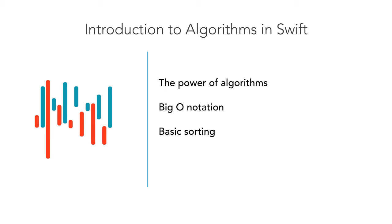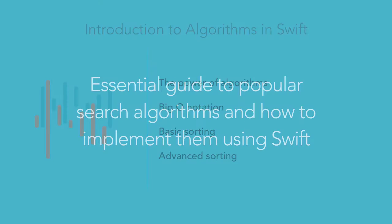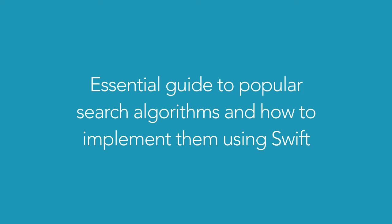Finally, we are going to talk about two more advanced sorting algorithms: merge sort and quick sort. At the end of this course, you'll have a good understanding of the popular search algorithms and the way they can be implemented using Swift. As the first part of a series on Swift programming, this course is an essential stepping stone for delving deeper into algorithms, data structures, and programming in general.